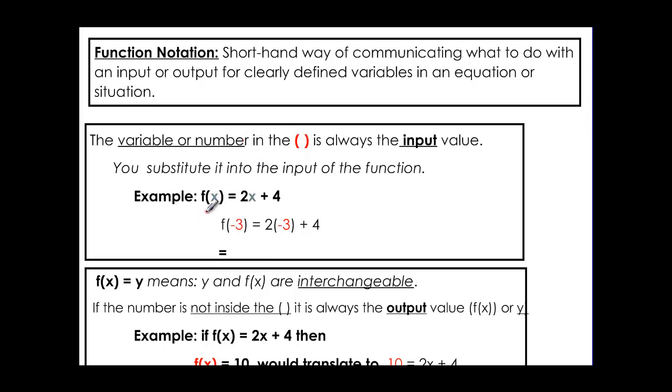And if we're writing just a function notation like f(x) = 2x + 4, we usually have a variable in there. But it could also be a number. And whatever's inside this parenthesis is always our input. Always the input. This variable and this thing always match. So you substitute into the function for the input.